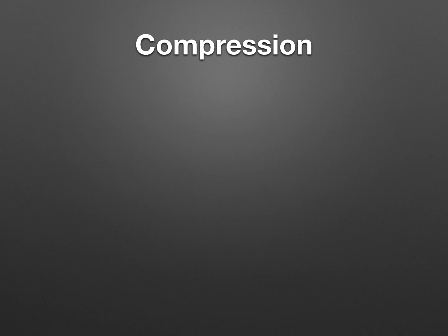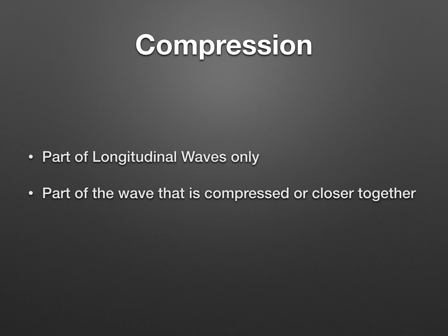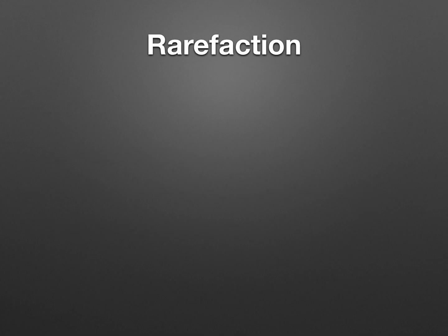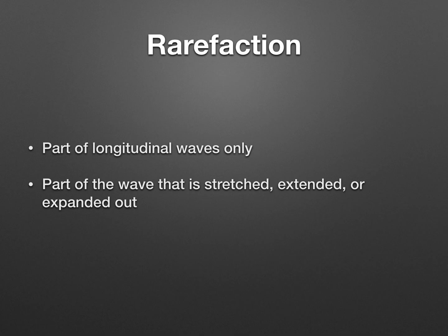The next is compression, which, like crest, is only a part of a longitudinal wave. By definition, it's the part of the wave that is compressed or closer together. With longitudinal compressional waves, this is known as the amplitude. This is why longitudinal is also called compressional — because compression is a key part of the wave. The second part only for longitudinal waves is rarefaction — the part of the wave that is stretched out, extended, or expanded, demonstrating the release of energy.